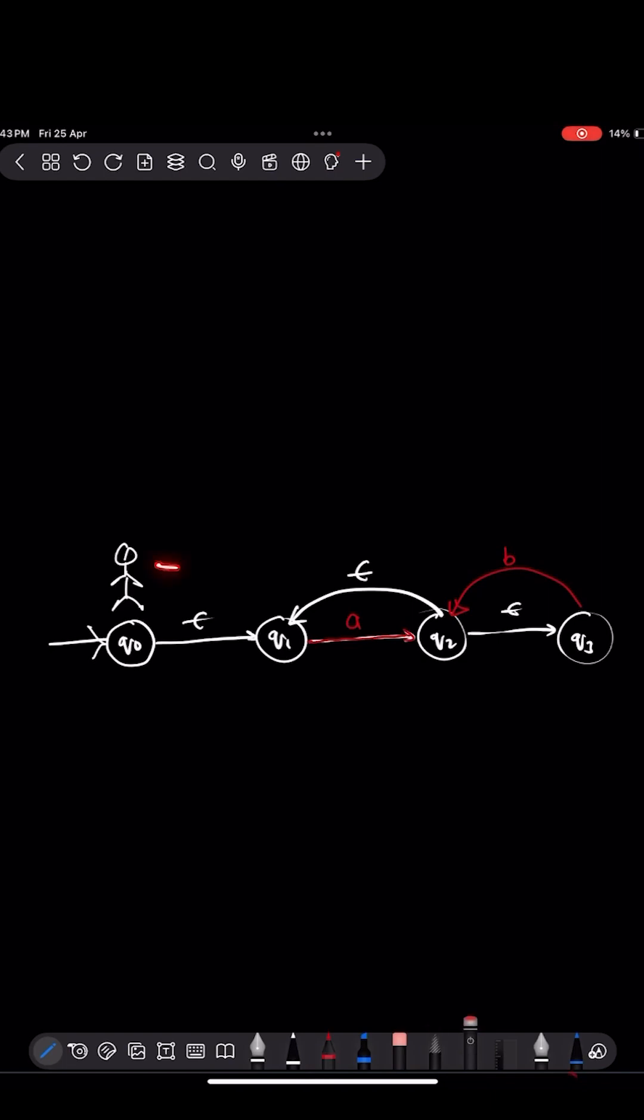I need to go from state q0 to q1. I can go directly because I have an Epsilon pass, so I don't need any input. And here I am at q1.